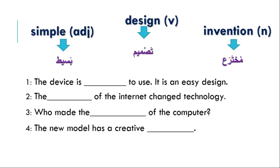Here we have four sentences. Let's put the correct words in the correct places. Number one: the device is ___ to use. It is an easy design. The key clue here is 'easy design,' and that points us to the answer: simple. The device is simple to use. It is an easy design.